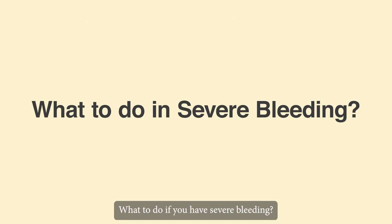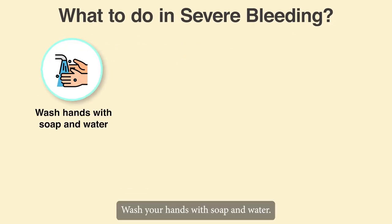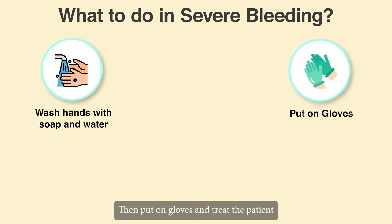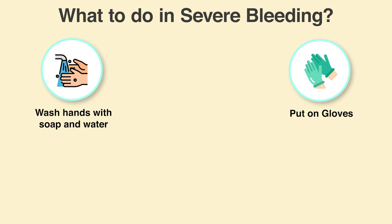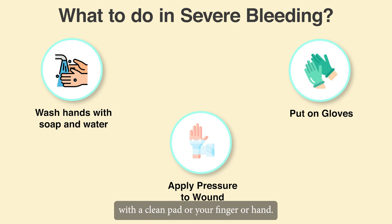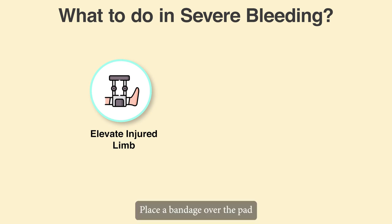What to do if you have severe bleeding? Wash your hands with soap and water, then put on gloves and treat the patient. Until a sterile dressing is available, apply pressure to the wound with a clean pad or your finger or hand. Elevate the injured limb while lying down comfortably. Place a bandage over the pad to apply additional pressure to the wound.